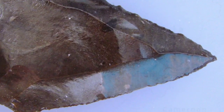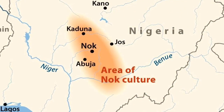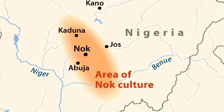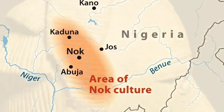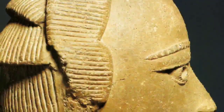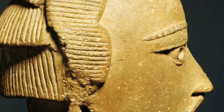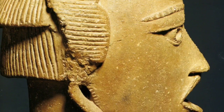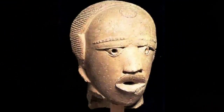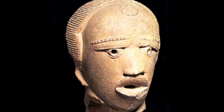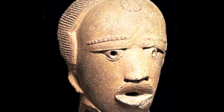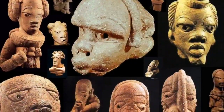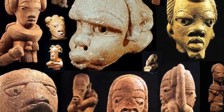The so-called Nok culture is one of West Africa's earliest known civilizations. In 1943, British archaeologist Bernard Fagg came into possession of a terracotta head from the region. He employed thermoluminescence to date the head to around 500 BC, thus giving a date to what had hitherto been a fairly mysterious culture.